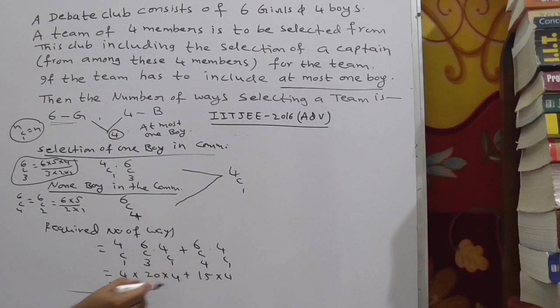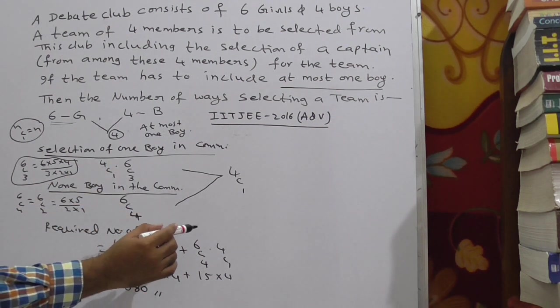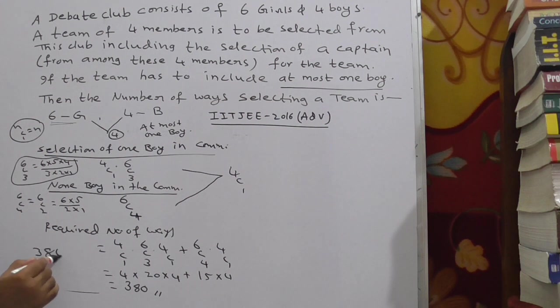80 into 4, 320 plus 60 gives 380. The number of required ways. Here it is. 380. What is the final answer for this question? So that is 380 ways.